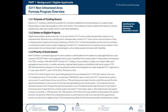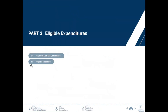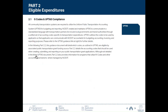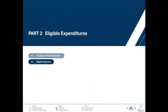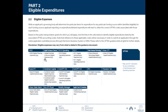Part 2.1 provides a brief summary of the Uniform Public Transportation Accounting System, or UPDES, and G-codes that will be used to categorize types of expenditures. Part 2.2 shows eligible G-codes and any special notes applicable to each funding program.